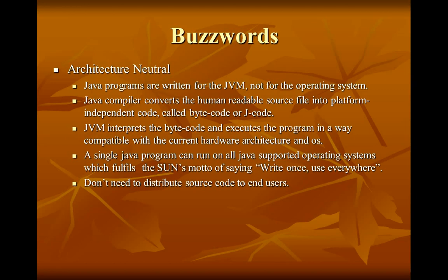Java is architecture neutral. Java programs are written for the JVM, not for the operating system. Wherever the JVM is, it doesn't matter which operating system it is running on — the Java program will run. Java converts human-readable source files into platform-independent code called bytecode or Jcode, which is then interpreted and executed in a way compatible with the current hardware architecture and operating system. A single Java program can run on all Java-supported operating systems, fulfilling Sun's motto: write once, use everywhere. There is no need to distribute source code to end users — just compile, create the bytecode, and transfer it to the client.